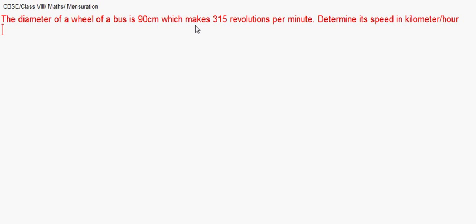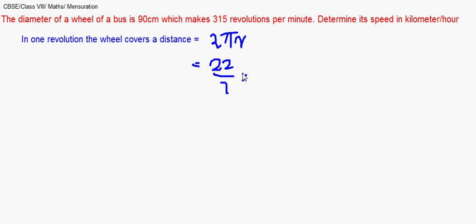Because again it's not informed about the pi, we will be taking 22 by 7. So we need to find the distance covered by the wheel in one hour. To do so let us find how long it travels in one minute. In one revolution the wheel covers a distance of 2 pi r.